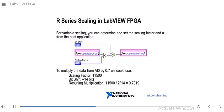Here is an example of doing some scaling with R-series in LabVIEW FPGA. We have an output coming out of an IO node reading analog input channel 0, and we want to scale that by a factor of 0.7.